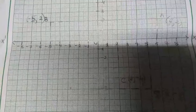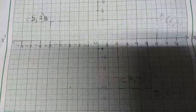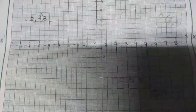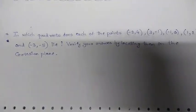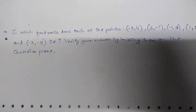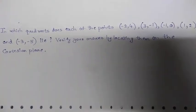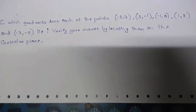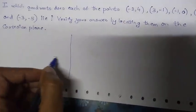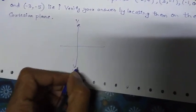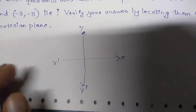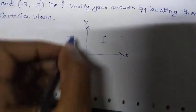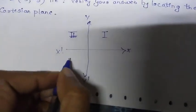Now we will move on to the last part: finding in which quadrant a given coordinate lies. The question is: in which quadrants do the points (−2, 4), (3, −1), (−1, 0), (1, 2) and (−3, −5) lie? You know that the Cartesian plane consists of two number lines — the x-axis and y-axis — dividing it into 4 quadrants: 1st, 2nd, 3rd and 4th.